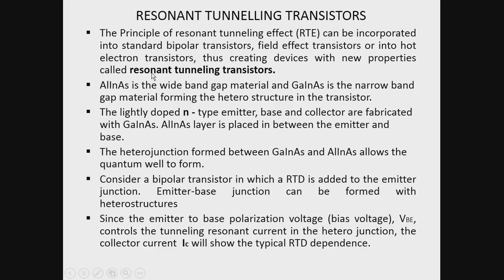In order to fabricate this device, we consider Aluminium Indium Arsenide as a wide band gap material and Gallium Indium Arsenide as the narrow band gap material. Aluminium Indium Arsenide is used as the tunnel barriers, and N-type Gallium Indium Arsenide is used for the base, emitter, and collector. The Aluminium Indium Arsenide is used as the barrier layer between the emitter and base.